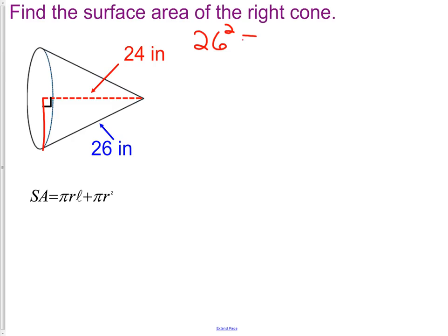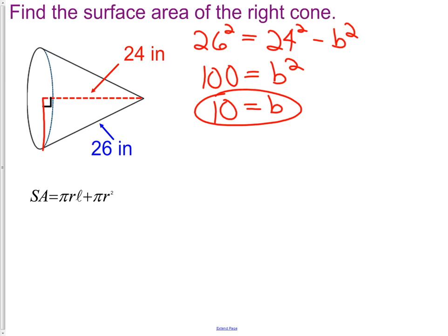We would do 26 squared, that's our hypotenuse, equals 24 squared minus b squared. Simplifying this, you would get 100 equals b squared, or b equals 10. b being the length of our radius.